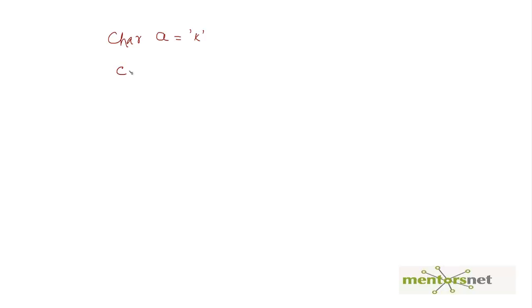To get started, let's declare and print a string variable. Remember that to declare a char variable we write char equal to 'x'. To define a string variable we can do something like: char str[], give it an array but don't give a size, and then initialize it immediately — for example, the string 'loadrunner rocks'. That is how we initialize a string.